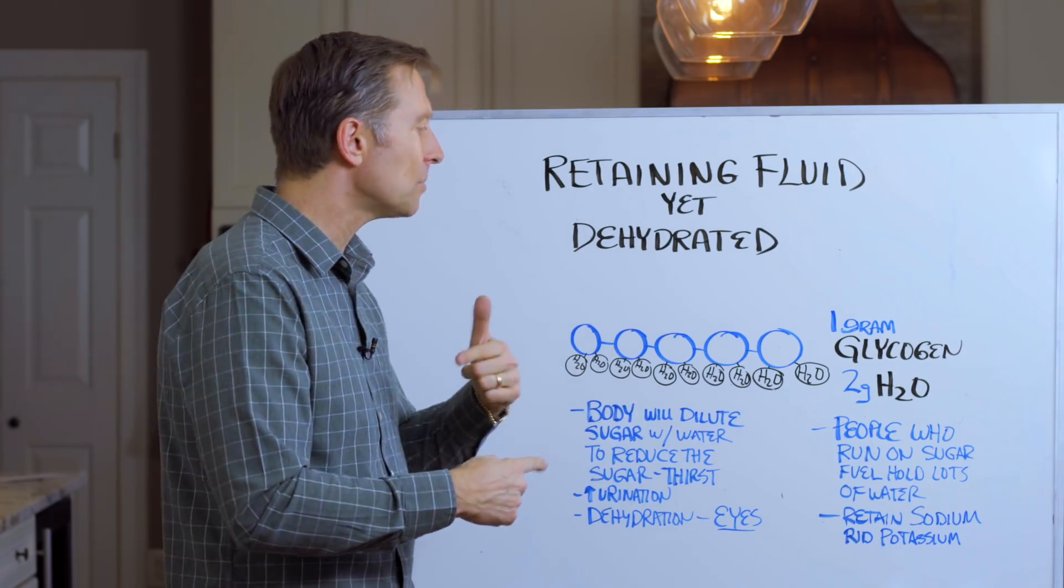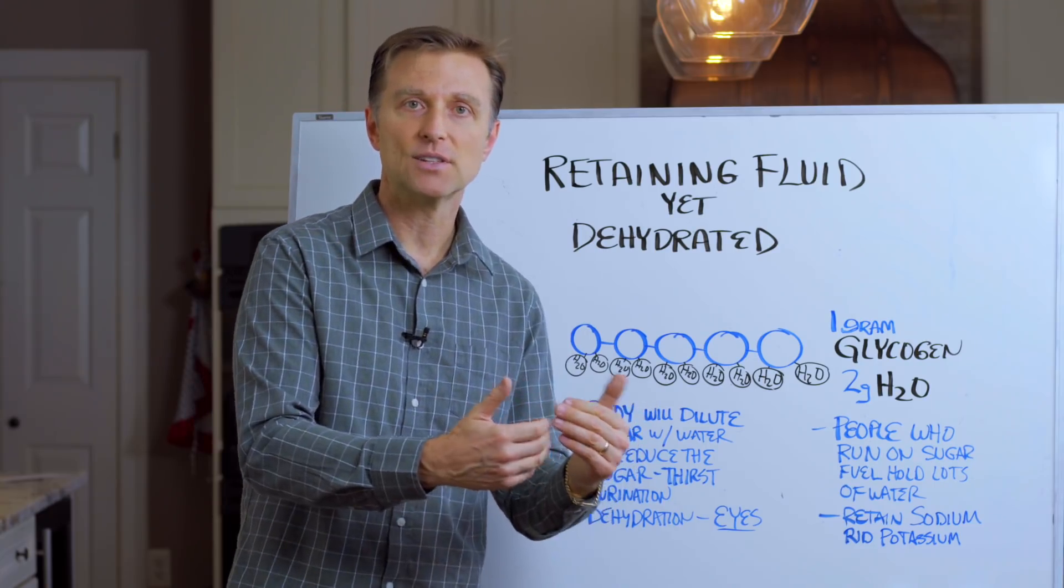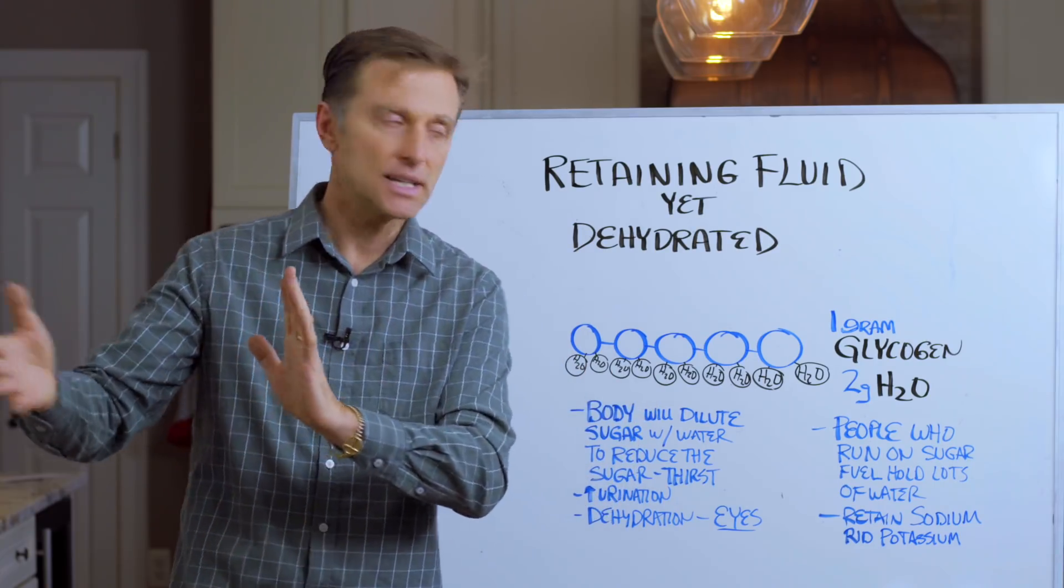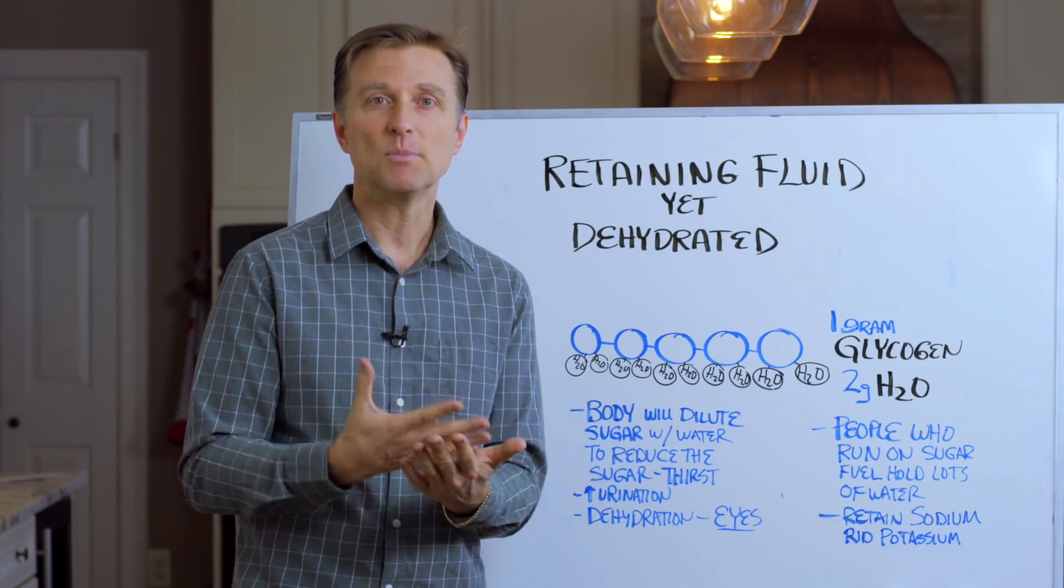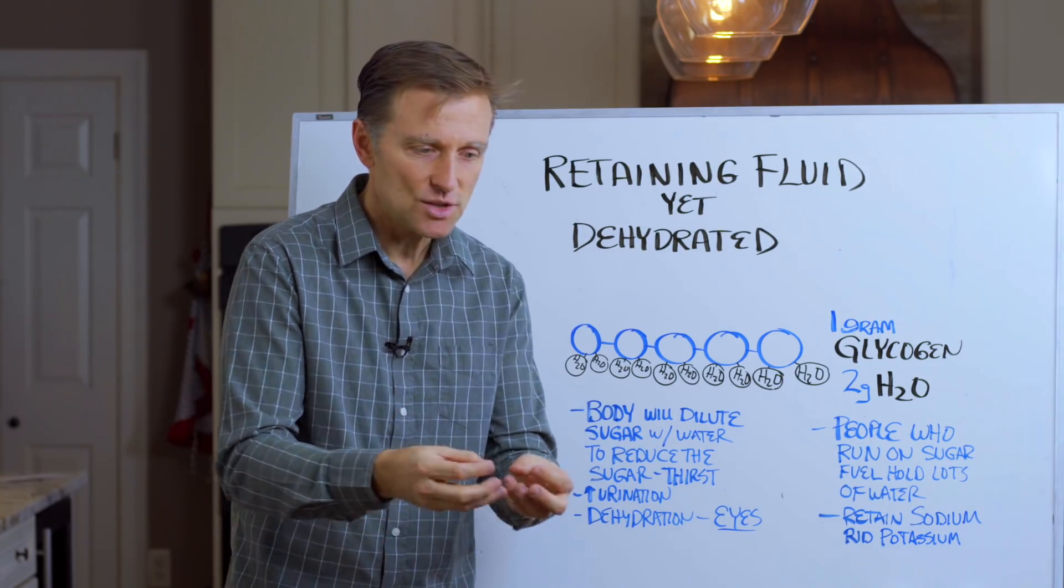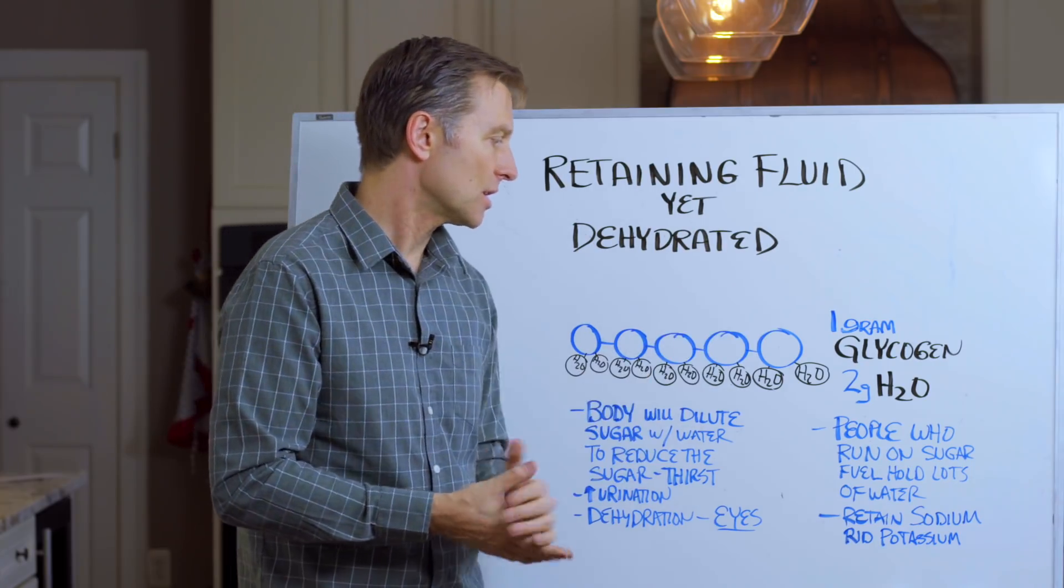So when you're running your body on sugar fuel and not on fat fuel because you haven't discovered the ketogenic diet or intermittent fasting yet, you're holding a lot of fluid. You're having edema or swelling. You press in the ankles and you see this dent that forms. That's because you're running on sugar.